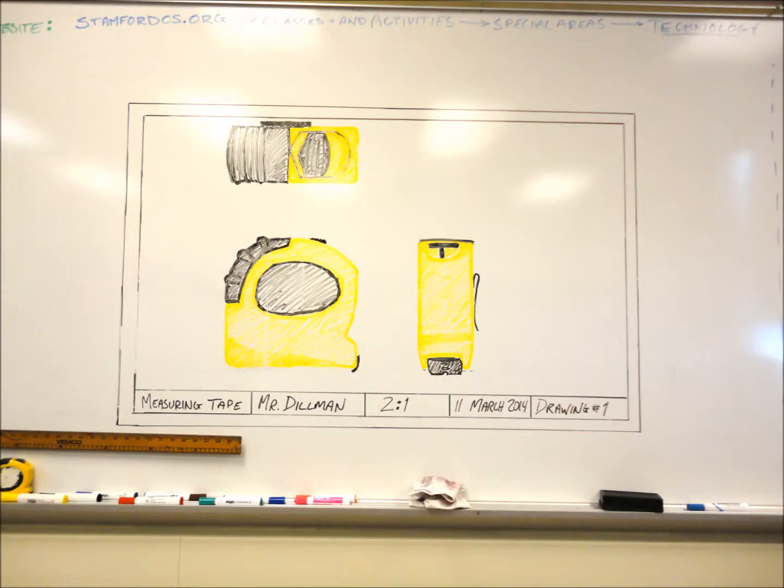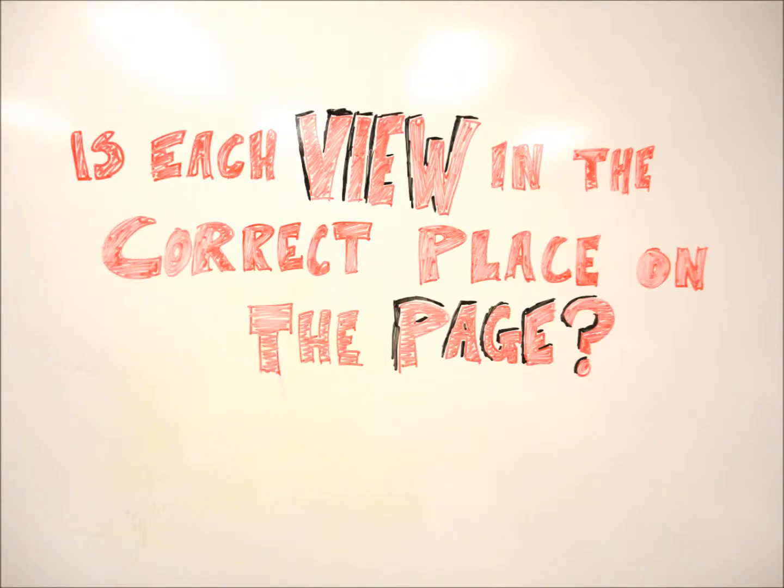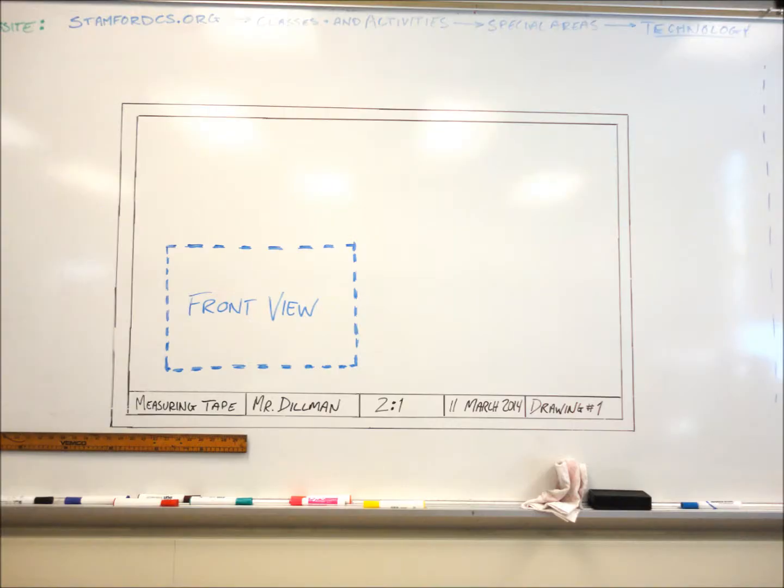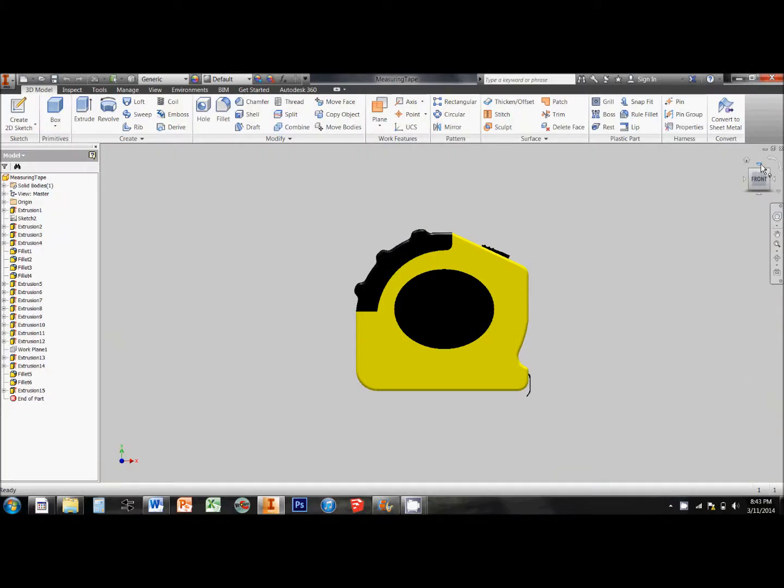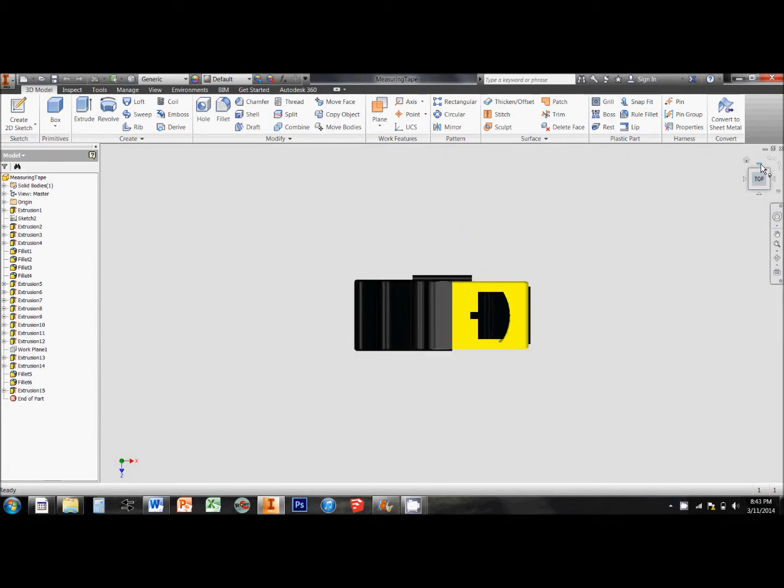Each of these views has a proper place on the drawing page, so the next question we must ask ourselves is: is each view in the correct place on the page? In a normal three-view orthographic, the front view belongs in the bottom left-hand corner of the page. The top view should be directly above it, as if we rotated the object up from the front view to see the top view.